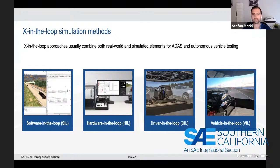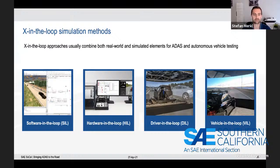Starting from the left with software-in-the-loop: this is a way to test components of ADAS software so that developers can check code performance in a simulated environment without actual hardware parts. The hardware-in-the-loop approach uses real-time simulation for checking a vehicle's hardware — in a typical hardware-in-the-loop testing process, a hardware test unit operates in a simulated environment.